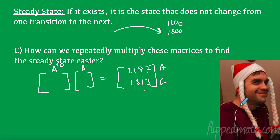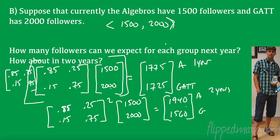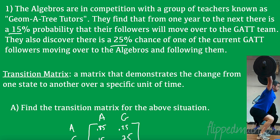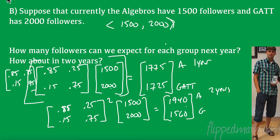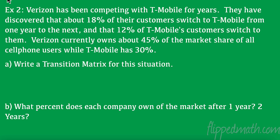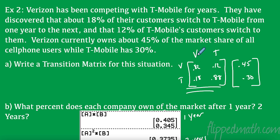Now I want you to try one on your own. Pause the screen and do parts A and B. For my transition matrix: Verizon's column must add up to 100 — 82% of their customers stayed, 18% went to T-Mobile. For T-Mobile: 12% went to Verizon and 88% stayed.